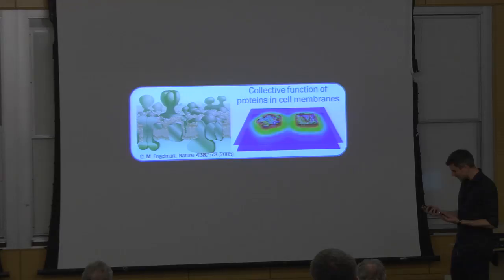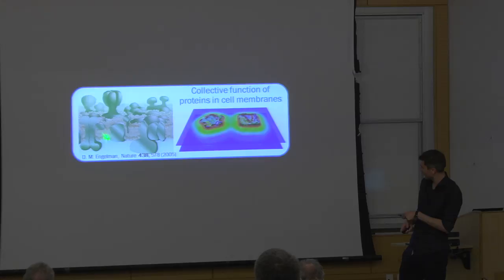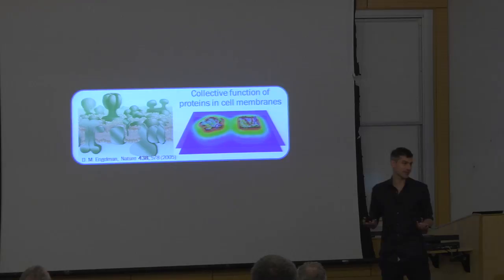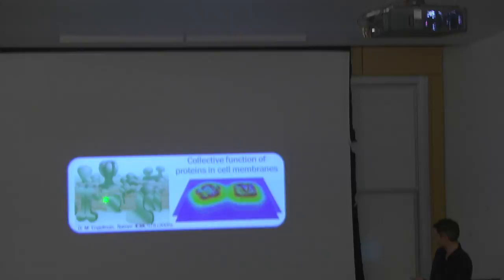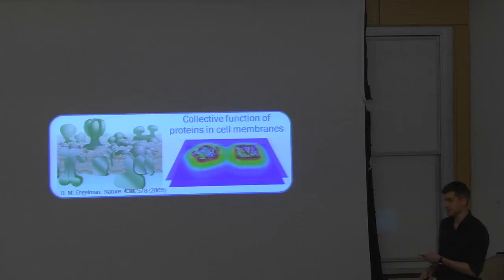For the purposes of this talk, there are two features of this cartoon that will become very important. The first is that membrane proteins — these blobs here — are generally expected to deform the surrounding lipid bilayer membrane. Secondly, cell membranes are crowded with membrane proteins, with the typical separation between two membrane proteins being of the same order of magnitude as the size of a protein. So in general, these protein-induced bilayer deformations will overlap.